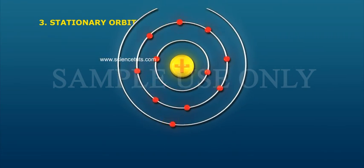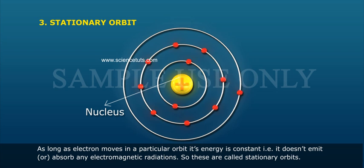Stationary orbit: As long as an electron moves in a particular orbit, its energy is constant. That is, it does not emit or absorb any electromagnetic radiations. So these are called stationary orbits.